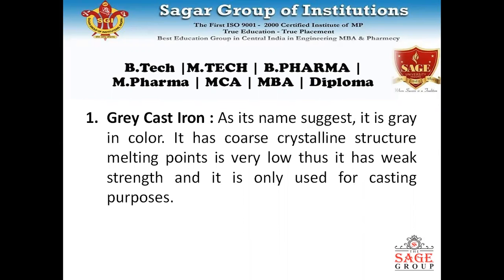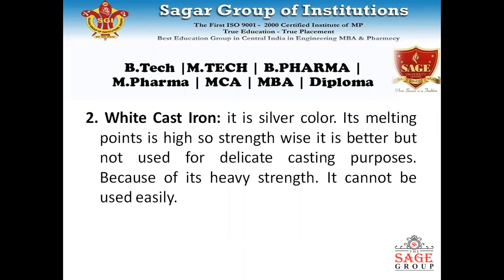Grey cast iron is used for its resistance properties. White cast iron has a silver color and a high melting point. Its strength is also better in comparison to grey cast iron, making it a better material overall. However, it cannot be easily used for casting different shapes.